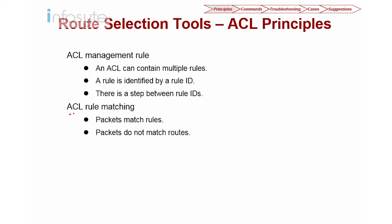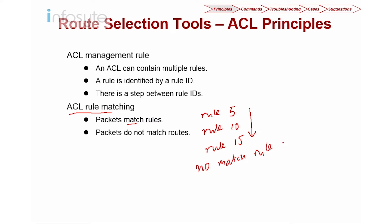Now let's look into the ACL matching rules. Packets match rules in order — if I have rule numbers 5, 10, and 15, they are matched in ascending order. If there is no rule that is matched, the behavior depends on what type of service you apply. Most vendors will deny when no rule is matched, but in Huawei, depending on the service applied, unmatched traffic can be permitted. I'll explain this further in the lab.